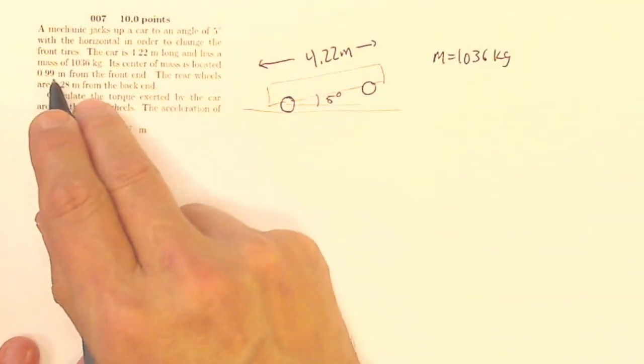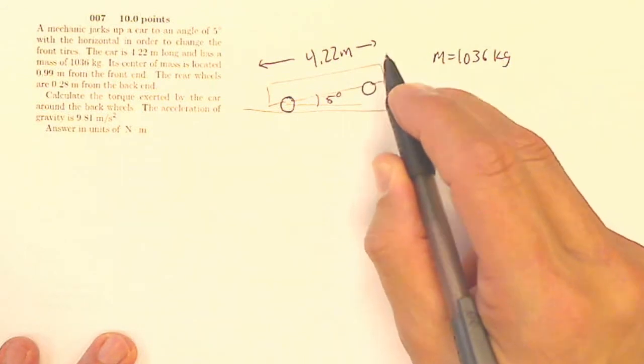It says the center of mass is located 0.99 meters from the front end. So this is the front end of my car because I want to change the front tires.